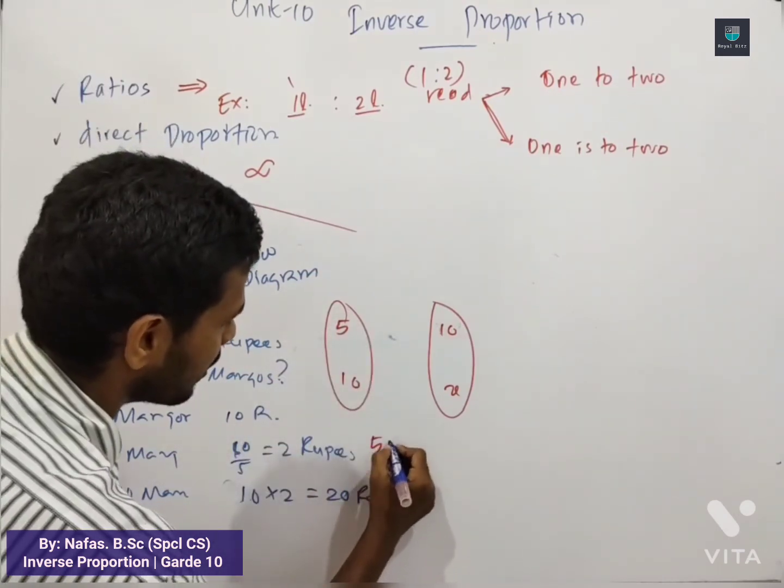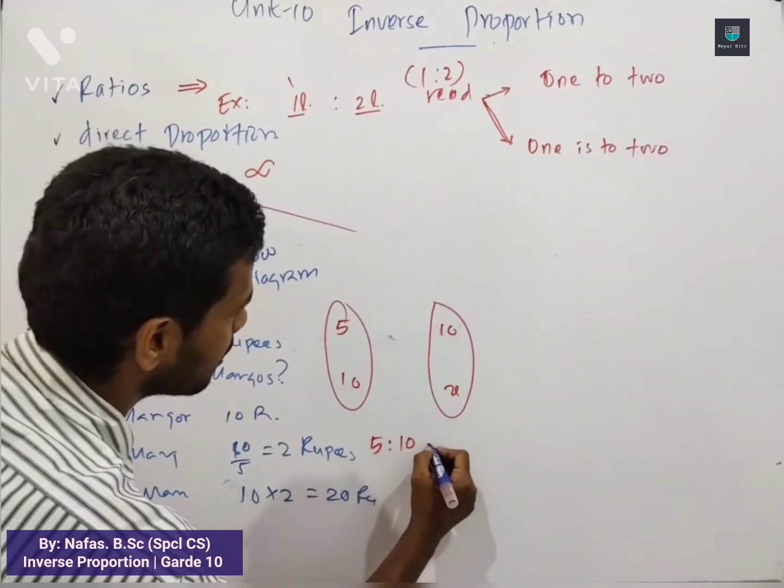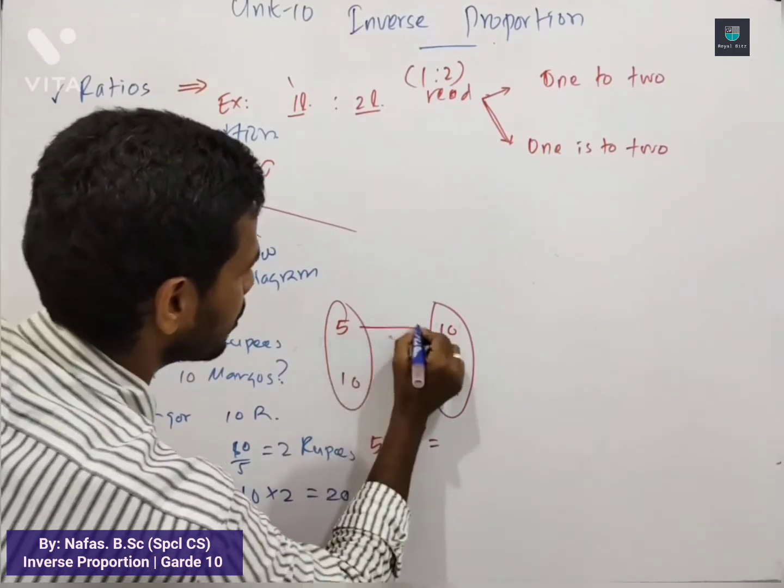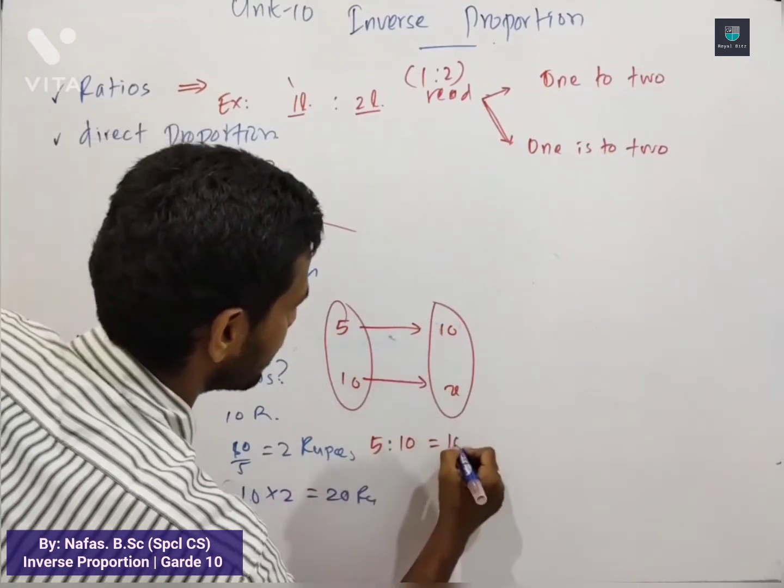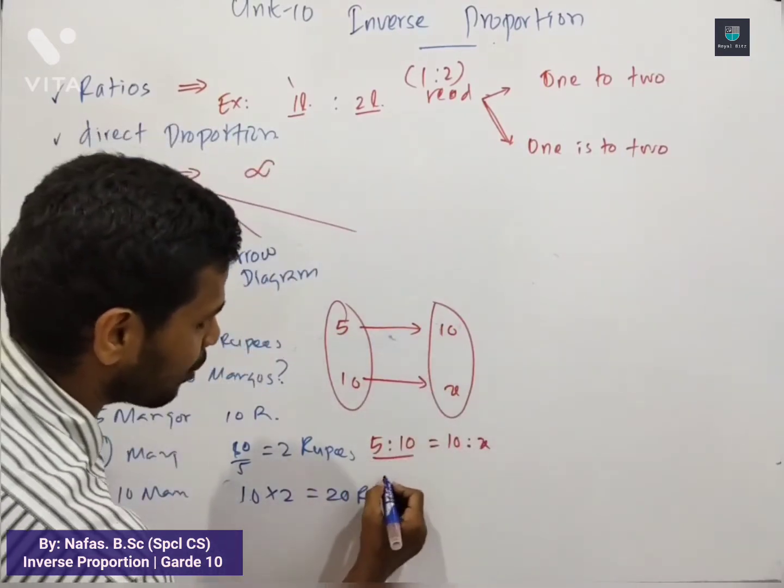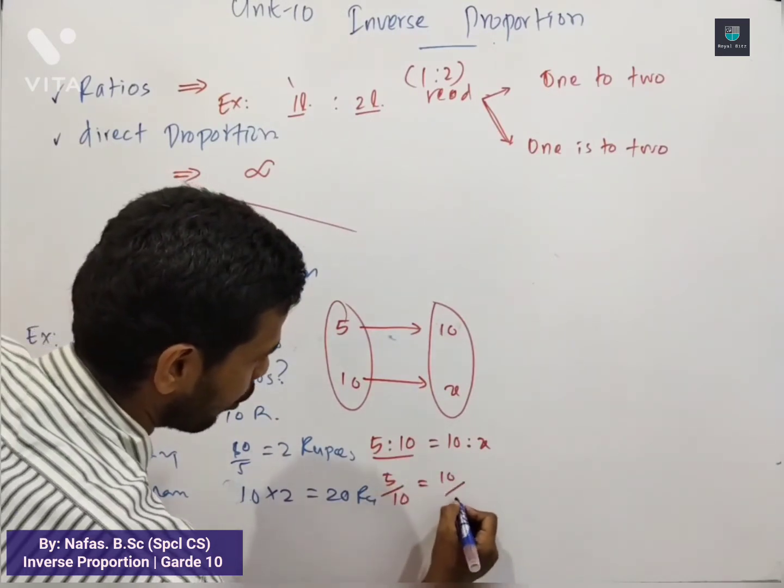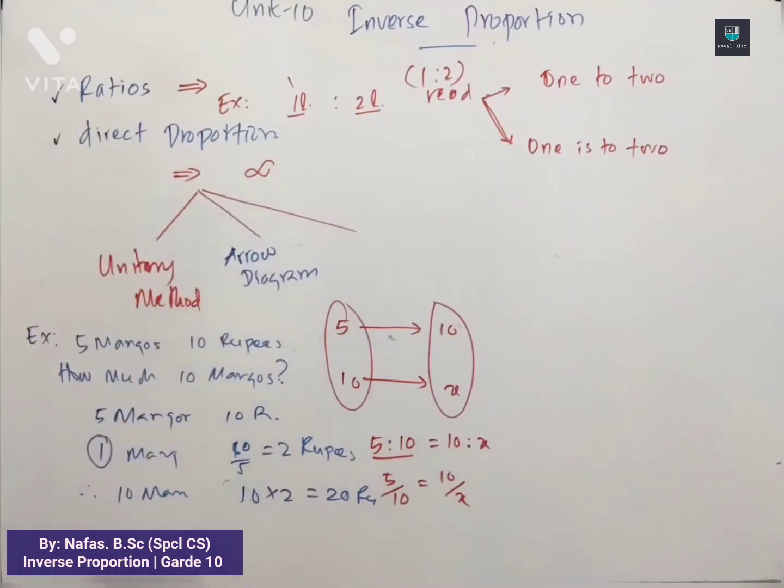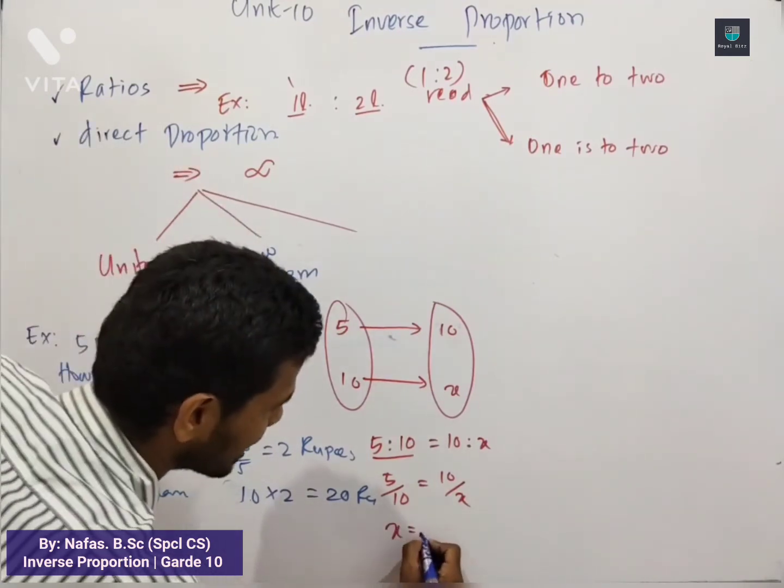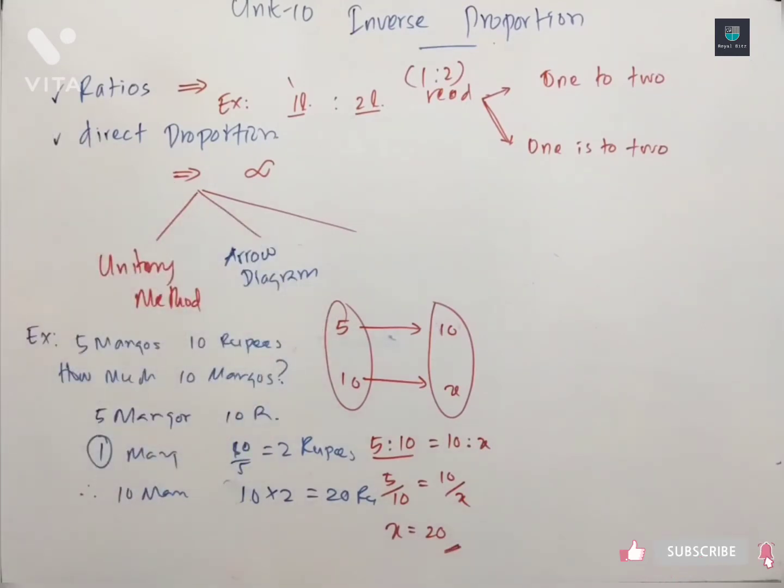Now we can write down Five is to Ten equal to Ten to x. So we can write down this in a fraction. Five over ten is equal to ten over x. From there, x is equal to twenty. This is Arrow diagram.